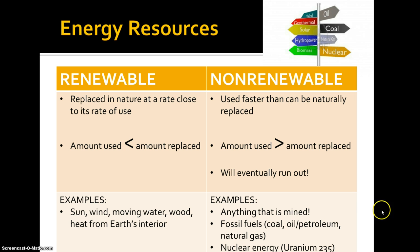Examples of renewable energy resources include sun, wind, moving water, wood, and heat from the Earth's interior — all of these are used less than they can be replaced. Non-renewable, on the other hand, is used faster than it can be naturally replaced, and we will eventually run out of non-renewables. This is why there's a push to switch to renewable energy sources, because they'll never run out.